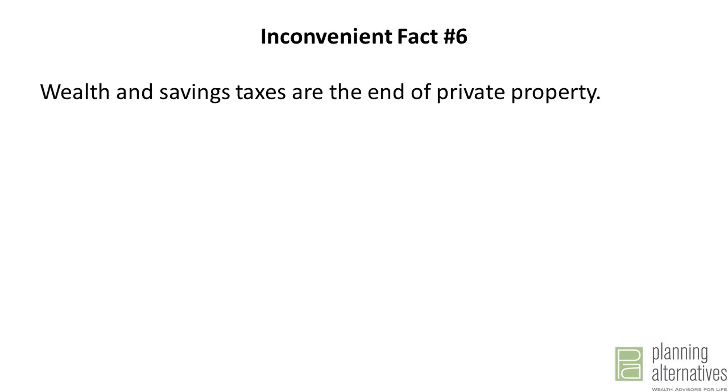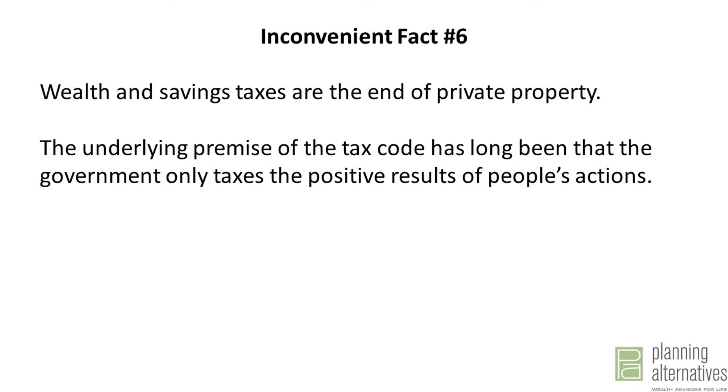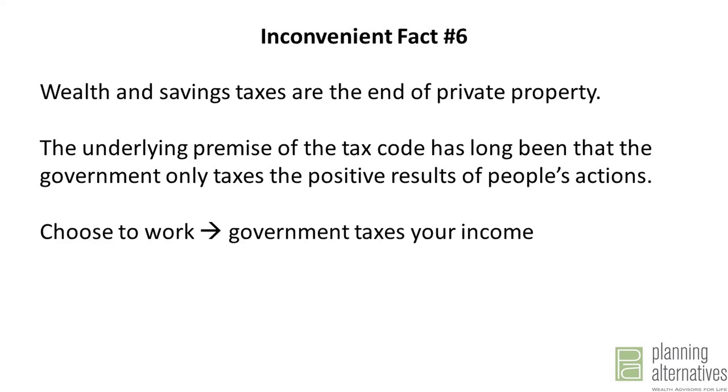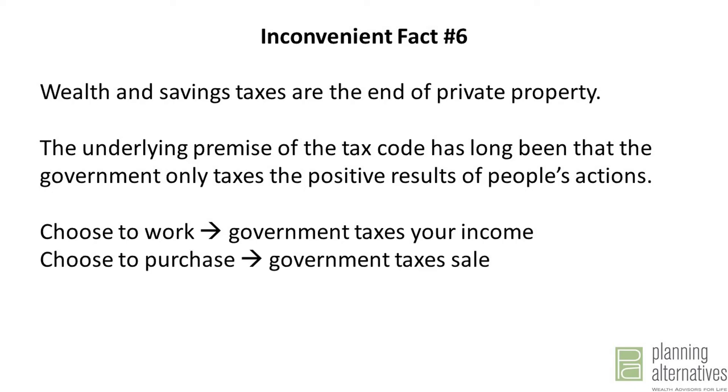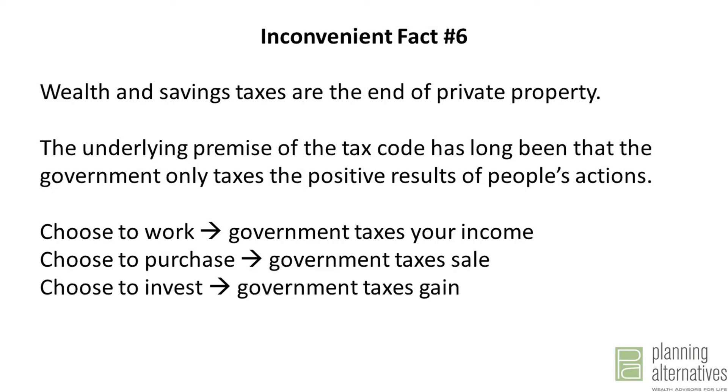And that brings us to inconvenient fact number six: wealth and savings taxes are an end to private property. The underlying premise of our tax code has always been that the government only taxes the positive results of people's actions — when you work, it taxes your income; when you purchase something, it taxes the sale; when you invest, it taxes the gain. But holding savings is an inaction — precisely the decision not to do something with your money. If the government can now turn its attention to taxing things you do not do, in addition to things you choose to do, we have reached a point at which nothing is off limits. In effect, we have no private property — we simply hold assets until the government decides it needs them.